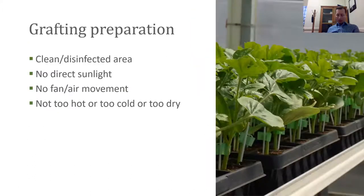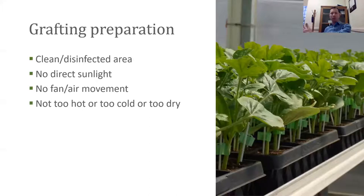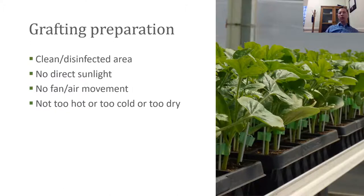We want to graft in an area that's been cleaned, ideally disinfected — not a dirty potting bench. You might want to graft on your kitchen table or put down some plastic over a dirty surface. We don't want to graft in direct sunlight — not in the greenhouse, not outside, not right in front of a sunny window. We want indirect light. We don't want to stress the plants during grafting and don't want a lot of air movement — no ceiling fans, no strong airflow — as that would cause the grafts to dry out. Not too hot, not too cold, not too dry: kind of like Goldilocks, we want it just right.